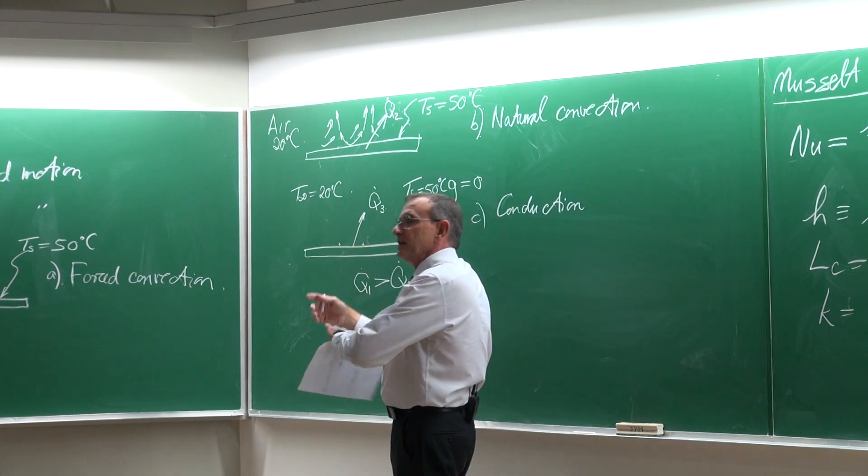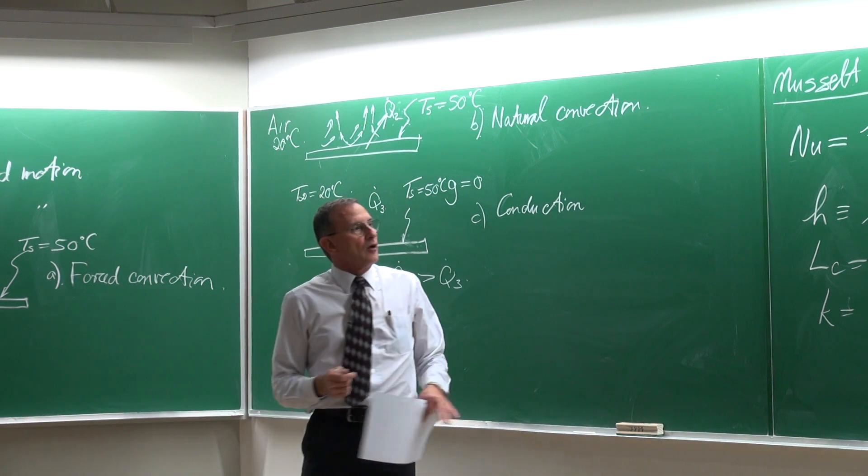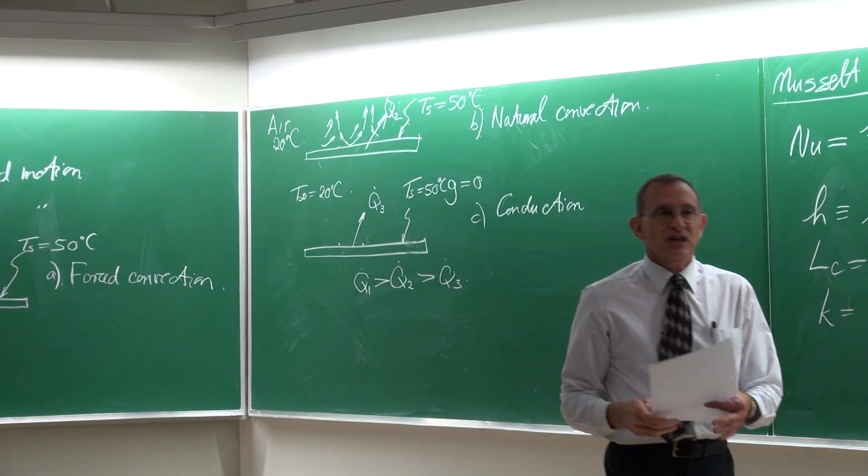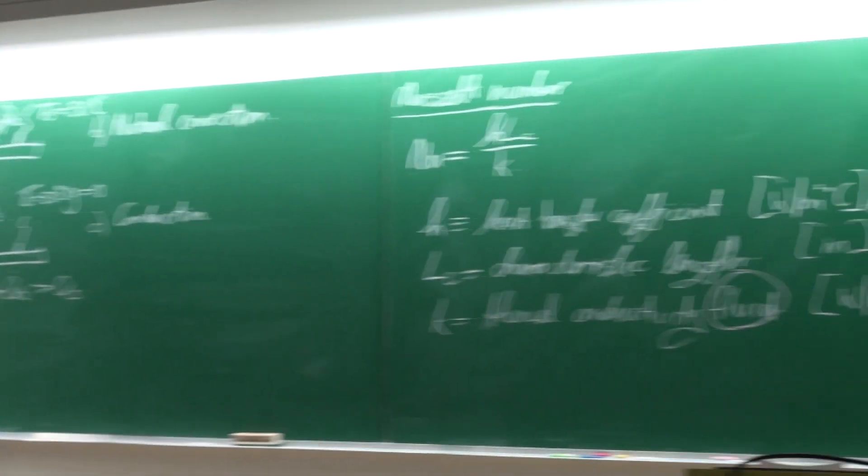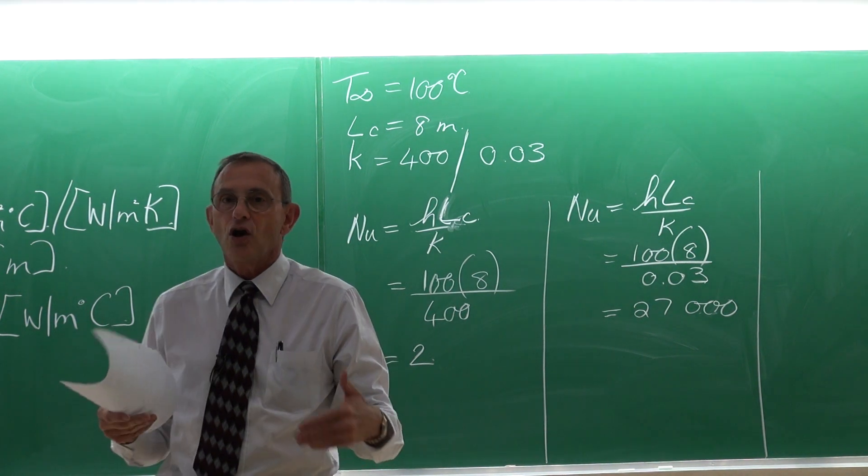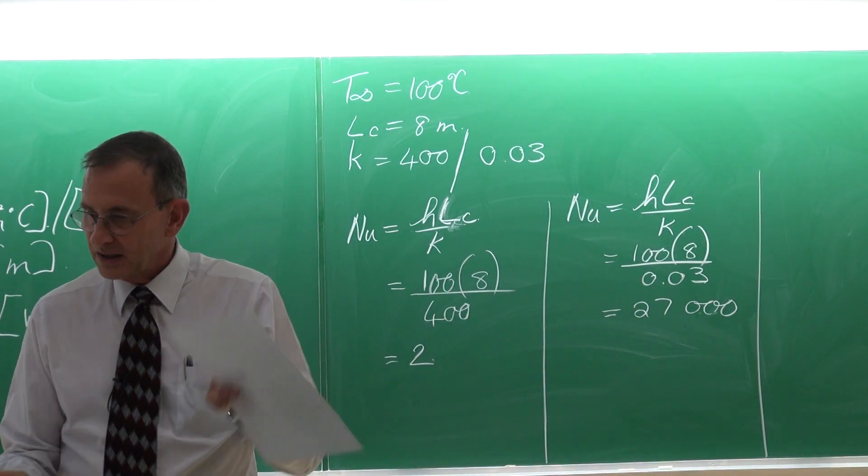If the Nusselt number for this is always equal to 1 for conduction, if the Nusselt number is 2 it means it makes the heat transfer double, while in the other case of 27,000, the heat transfer by the forced convection would be 27,000 times larger than that of conduction. So that is what it means.